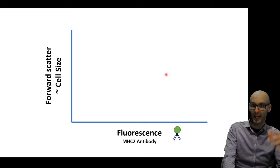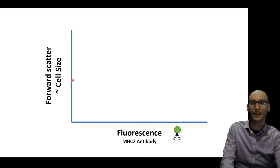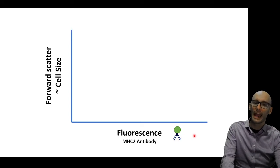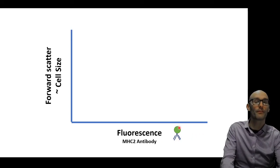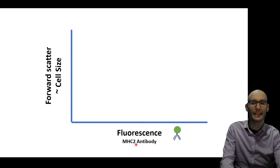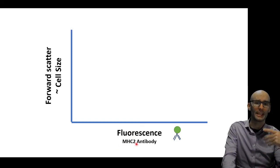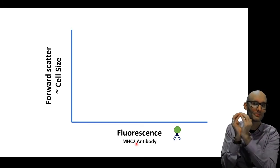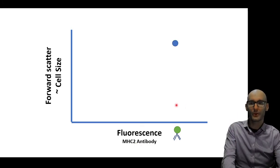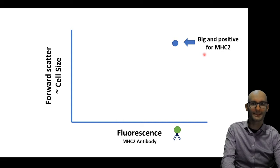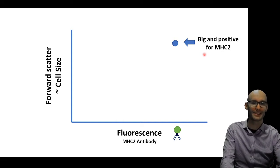So now we then graph that. So on the y-axis here, I've got the forward scatter, so that's how big the cell is roughly, and on the x-axis here, we've got fluorescence. So did it have the antibody or not? And in this case, I've said, let's say the antibody is for the MHC2 protein, which is present on the surface of antigen presenting cells. So here we have a cell, the cell is big, and it expresses MHC2. So we can see it's big and positive MHC2. That sounds a lot like a macrophage, because macro means big, phage means eater.